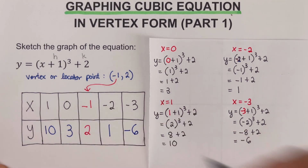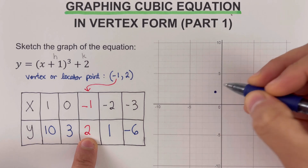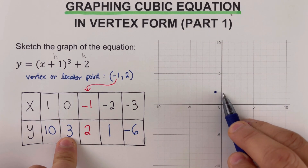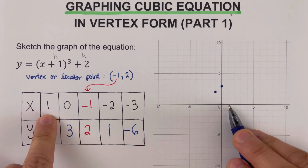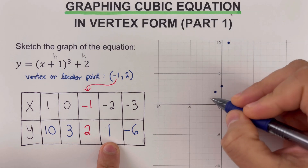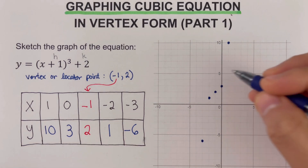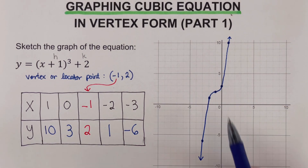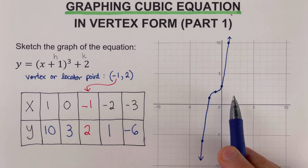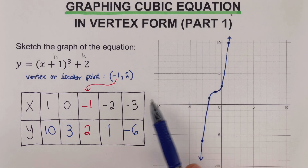The third step is to sketch the graph. We start with the vertex at (−1, 2). The second dot is (0, 3), which goes up a bit. Then (1, 10) goes all the way up. Then (−2, 1) sits lower, and (−3, −6) is down here. We go ahead and sketch the cubic graph through these points. Notice that the left tail of the graph goes toward negative infinity on the x-axis, and the right tail goes toward positive infinity.